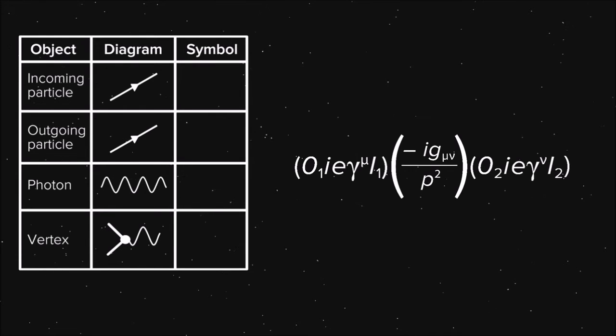For instance, the incoming electron corresponds to the letter I, while the outgoing electron corresponds to the letter O. The photon corresponds to a fraction, specifically minus I g sub mu nu over p squared. The I is the square root of negative 1, while the g sub mu nu is used to handle adding up all the relevant subatomic spin for the photon. The p is just the energy carried by the photon.